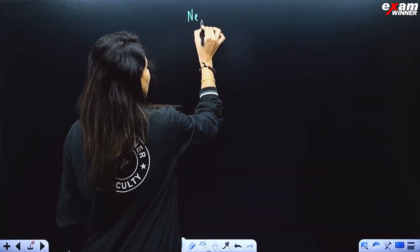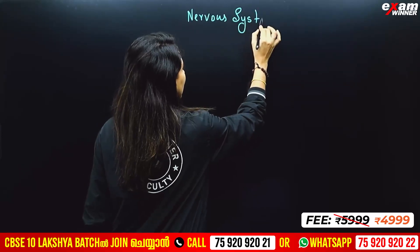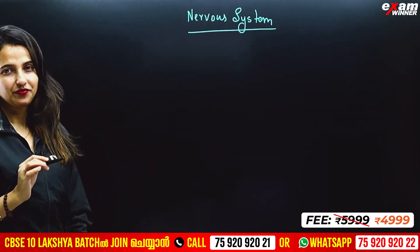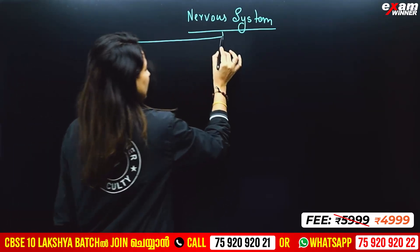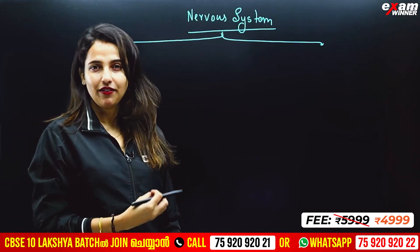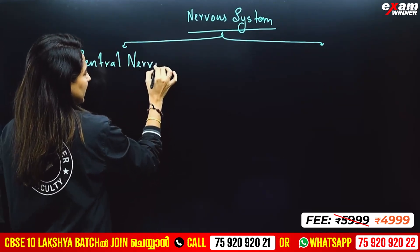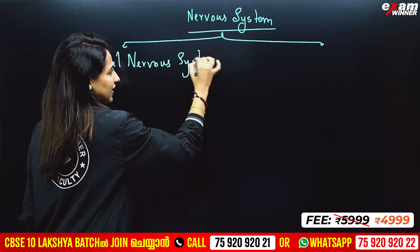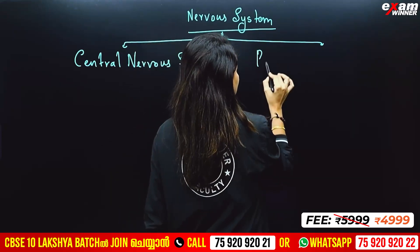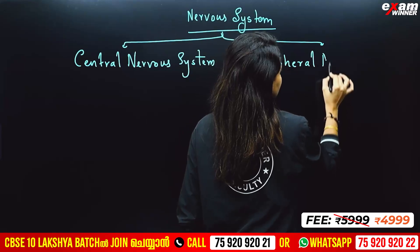Now we are going to talk about the Human Nervous System. The human nervous system is divided into two parts: the central nervous system and the peripheral nervous system.